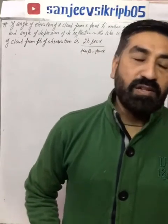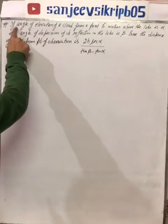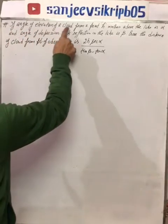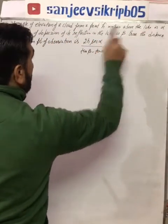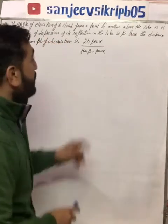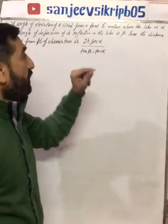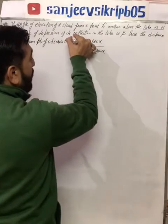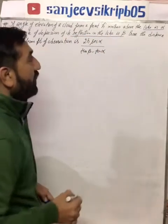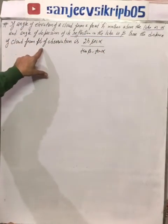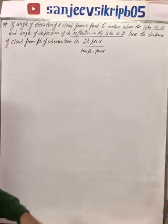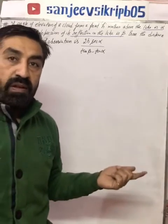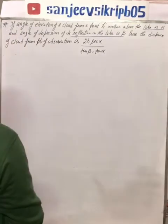Hello students, here is your math teacher Sanjeev Sikri. Today I am going to take a question from Chapter: Applications of Trigonometry for standard 10. The question is: the angle of elevation of a cloud from a point h meters above the lake is alpha, and the angle of depression of its reflection in the lake is beta. We need to find the distance of the cloud from the point of observation.